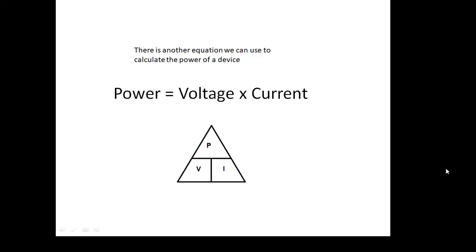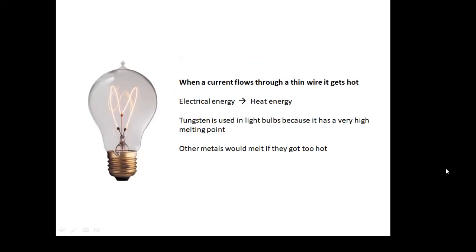Well, when a current flows through a thin wire, it gets hot. When a current flows through any metal, it becomes hot, but a thin wire gets very hot. Electrical energy is transferred into heat energy. In light bulbs, they use tungsten because it has a very high melting point. Other metals would melt if they got too hot.